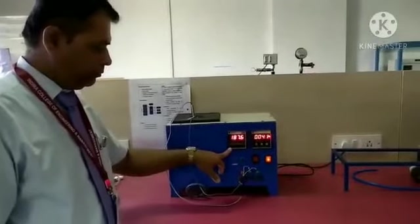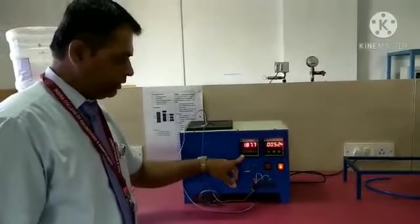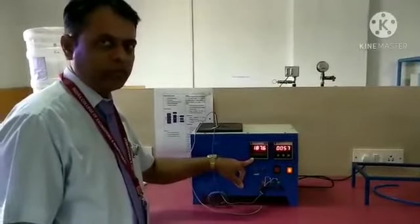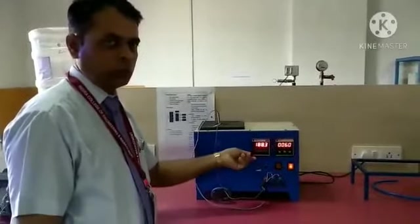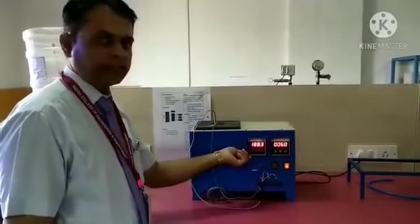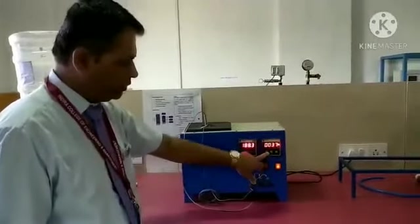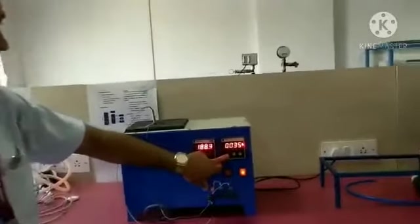Now the voltage rises and it gets stable after some time. You have to give the time period for this to stabilize the output. Then you can take the readings. So this is the reading for 50 degrees centigrade.